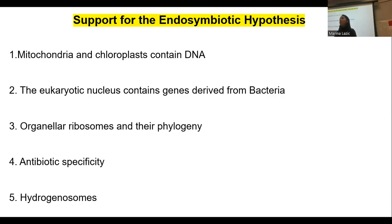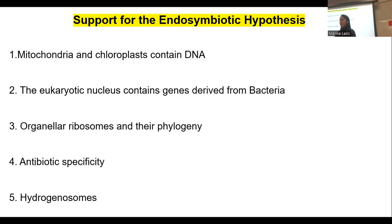The first reason is that mitochondria and chloroplasts contain their own DNA, which is very similar to prokaryotic DNA. Second, the eukaryotic nucleus also contains some genes derived from bacteria — an exchange of genetic material inside the cell. With sequencing, we can now find bacterial homologs in the eukaryotic genome. Third, there are special ribosomes in mitochondria and chloroplasts that are 70S, unlike the 80S ribosomes in the eukaryotic cytosol.